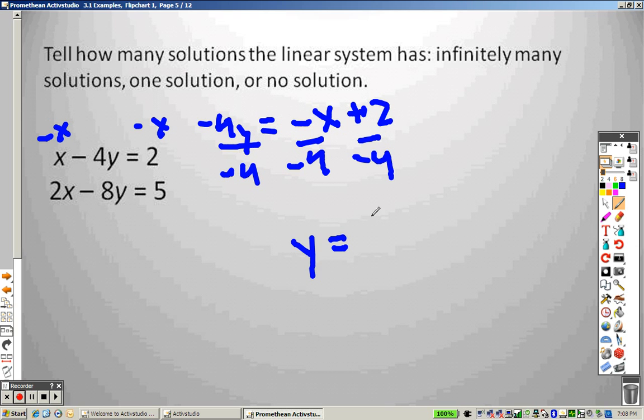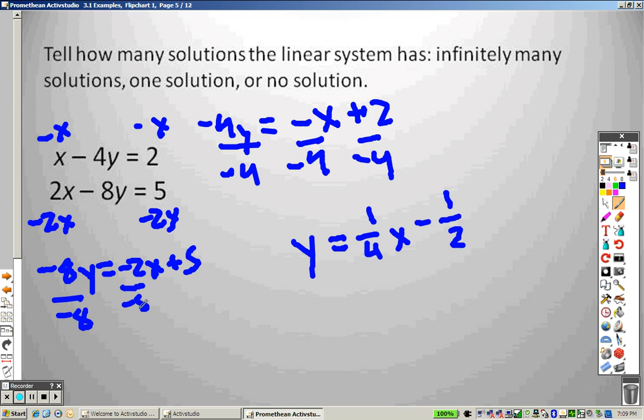And the top one gives me 1 over 4x. And that reduces to 1 half. This one right here, I minus 2x. Because I'm trying to get it by itself, so I get negative 8y equals negative 2x plus 5. Divide by a negative 8, which means I end up getting y equals, that reduces to 1 fourth x and minus 5 over 8.